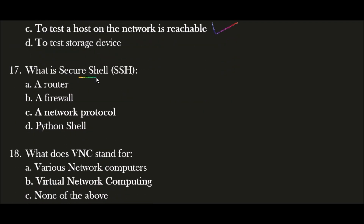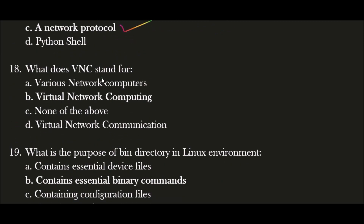Next question: What is Secure Shell (SSH)? The correct answer is option C — a network protocol. Secure Shell SSH is a network protocol. Next question: What does VNC stand for? The correct answer is option B — Virtual Network Computing. VNC stands for Virtual Network Computing.